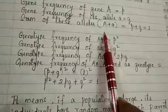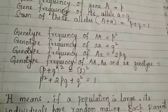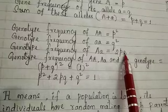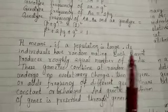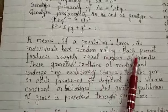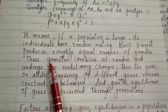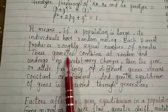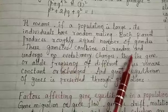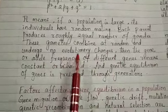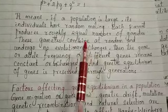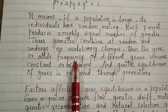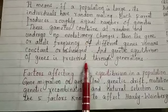If we take the sum of the frequencies of all three genotypes, we get p squared plus 2pq plus q squared, which equals (p+q)² = 1. This means if a population is large and its individuals mate randomly, each parent produces roughly equal numbers of gametes, and all these gametes combine randomly to give rise to constant allele frequency — but only if no evolutionary changes like mutation or natural selection occur.